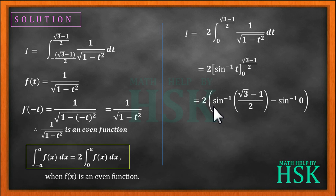equal to 2 times sine inverse root 3 minus 1 upon 2 minus sine inverse of 0. Now the value of sine inverse of 0 is 0, so we get I as equal to 2 times sine inverse root 3 minus 1 upon 2 which is the required answer.